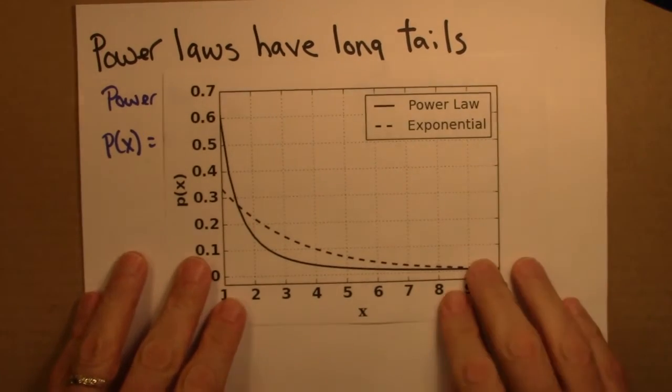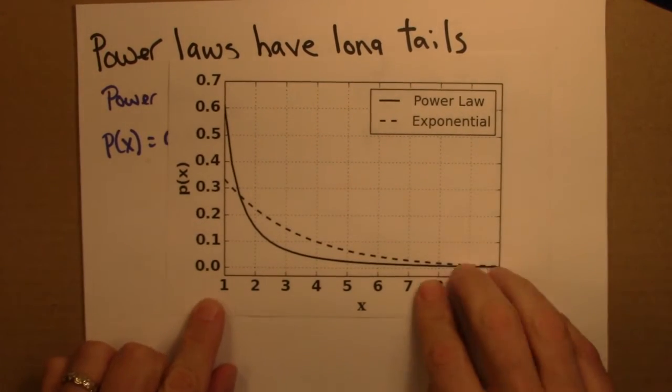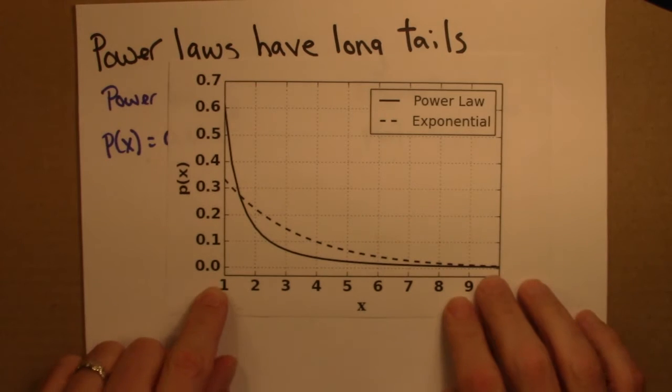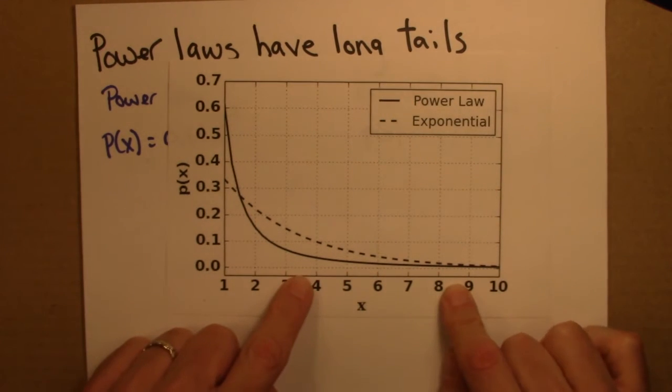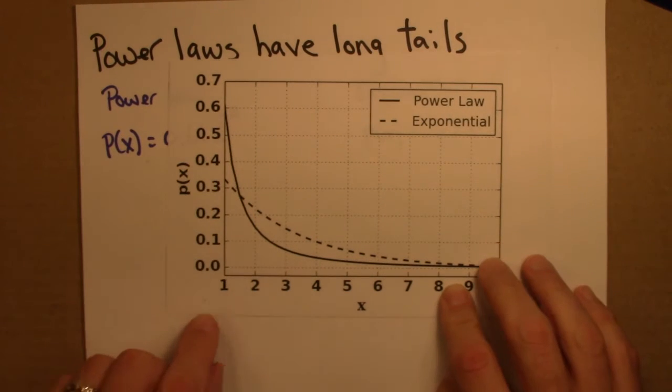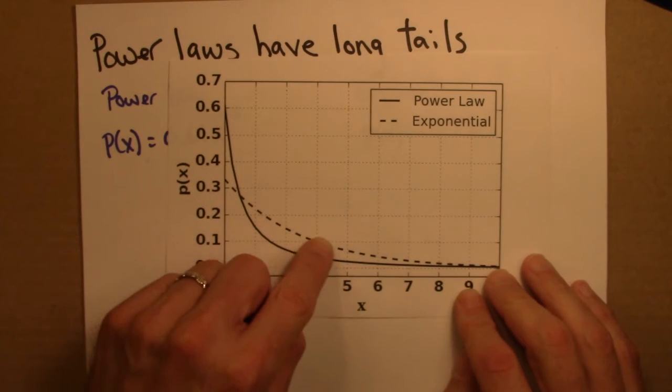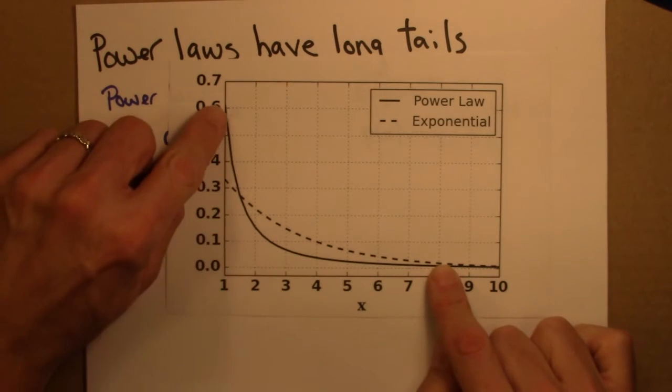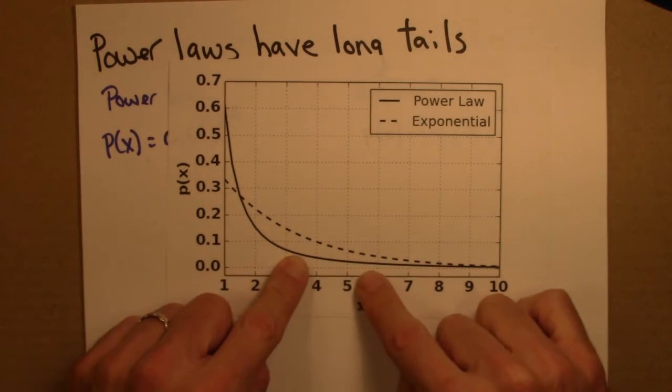So here I'm plotting these functions from 1 to 10. And they're both decaying. The larger x values are less likely, much less likely than small x values. So the exponential actually starts off decaying slowly and the power law decays pretty quickly.